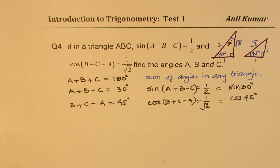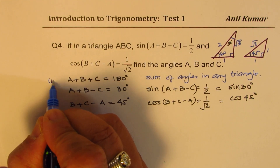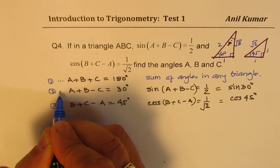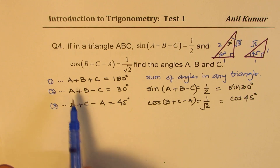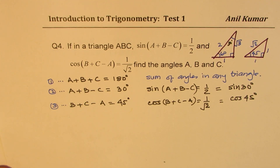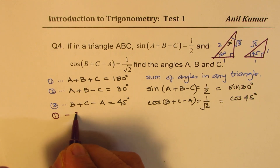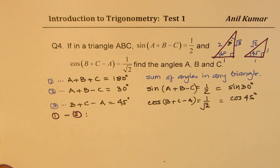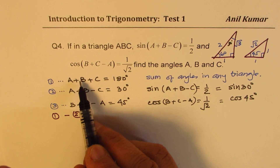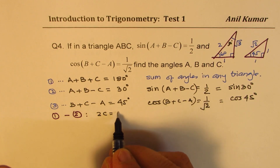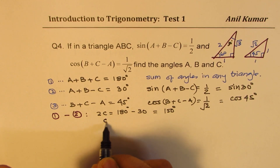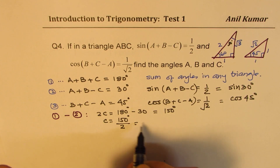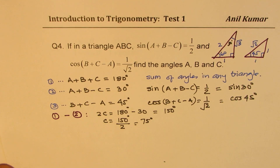These are the three equations: (1) a + b + c = 180°, (2) a + b − c = 30°, and (3) b + c − a = 45°. If I subtract equation 2 from equation 1, a minus a is 0, b minus b is 0, and we get 2c = 180 − 30 = 150 degrees. So c equals 150 divided by 2, which is 75 degrees.